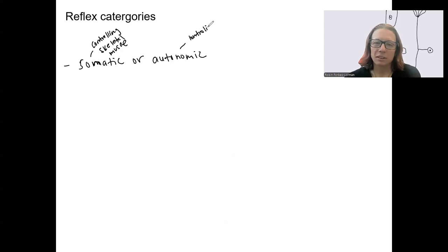Versus controlling... glands, smooth muscle, cardiac muscle. Three big ones. We will focus on somatic this week and see more autonomic when we get to the autonomic nervous system.